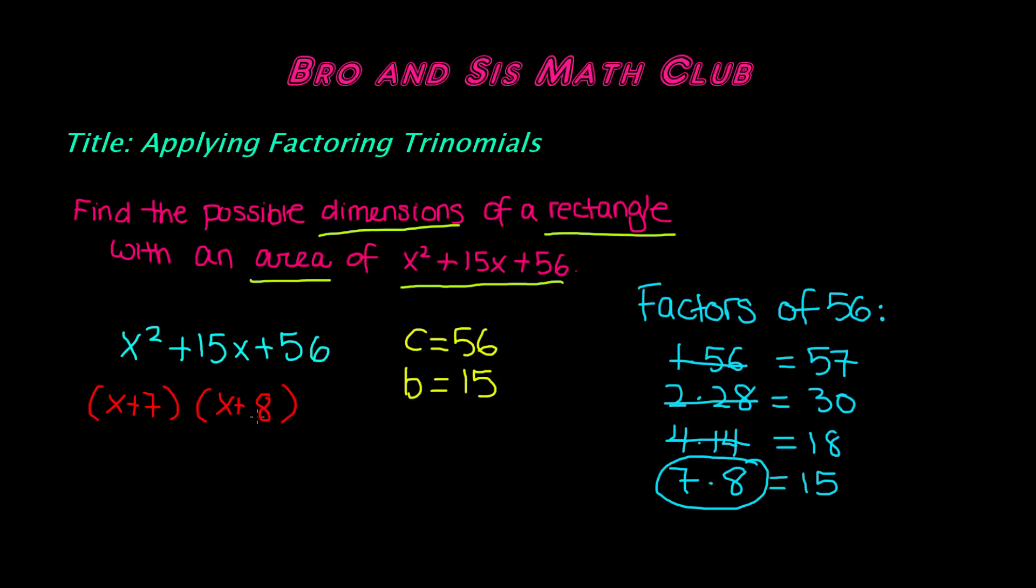So this is how you factor this trinomial, x squared plus 15x plus 56, and we get x plus 7 and x plus 8. So this is the factorization.